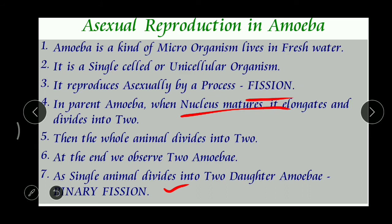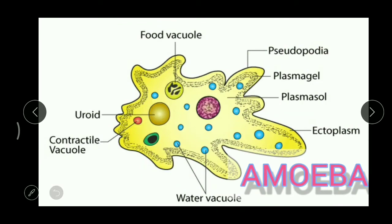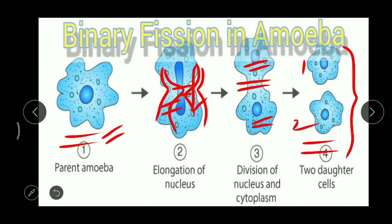So the common method of reproduction in amoeba is fission, specifically called binary fission. Sometimes one parent cell can divide into many daughter cells, and in that case we call it multiple fission — multiple meaning more than two. But the common method of fission in amoeba is binary fission. This is the process by which a single parent divides into two daughter cells.